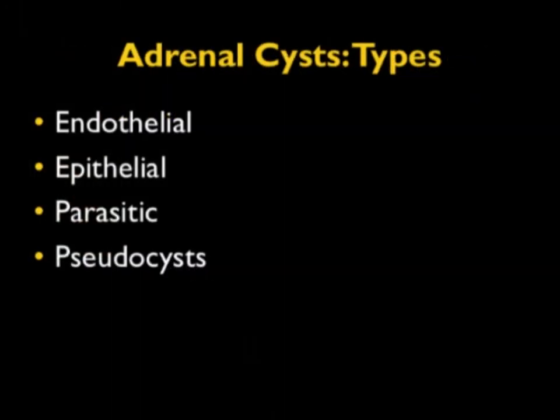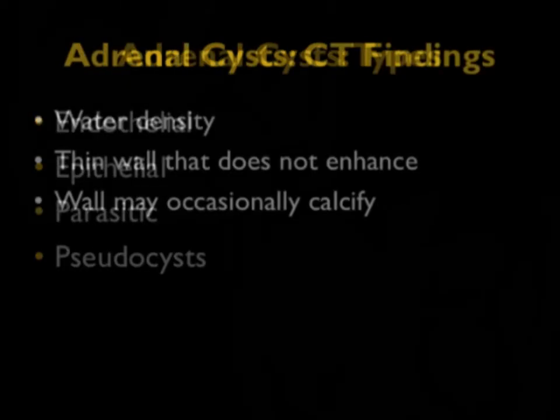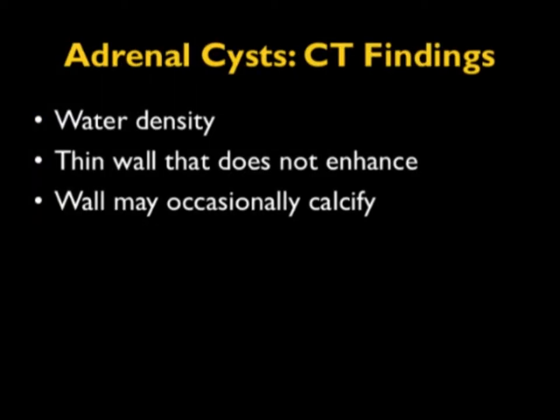There are a number of different adrenal cysts — endothelial and epithelial are the two most common — but you can see parasitic and pseudocysts as well. In our practice, parasitic is surely the least common. Adrenal cysts are just like cysts in the liver or kidney: water density, well-defined, with a thin wall capsule that does not enhance.